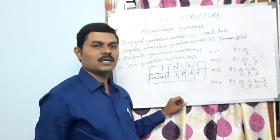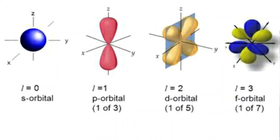The angular momentum quantum number also explains about the shape of the orbitals. The S orbital is spherical in shape, just like a sphere. The P orbital is a dumbbell shape. The D orbital is a double dumbbell shape. The F orbital has a complex shape.